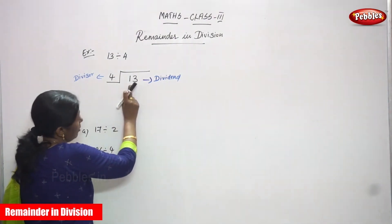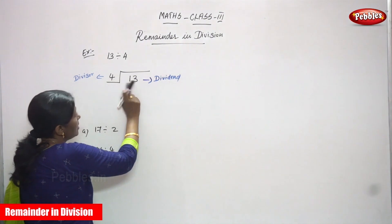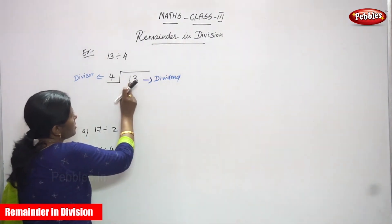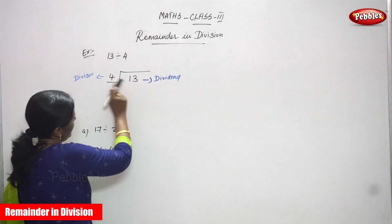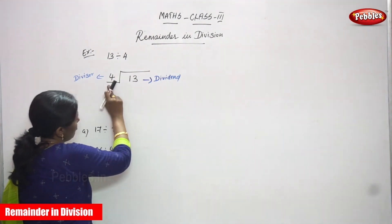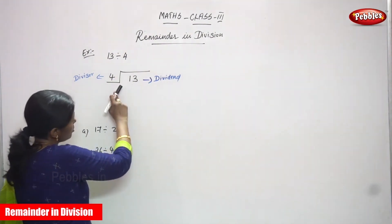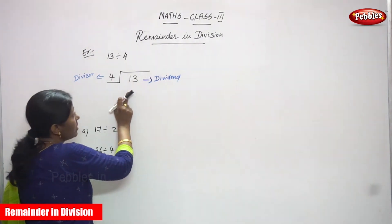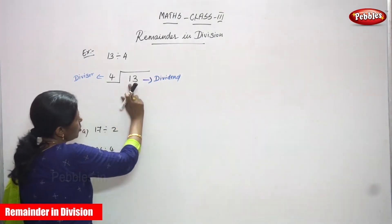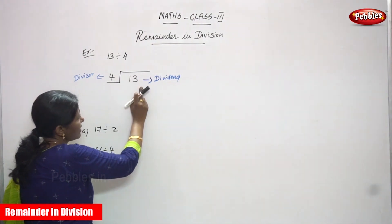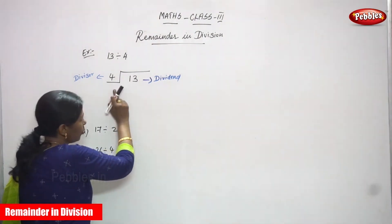First, you must see the first number. This is the 1's place and this is the 10's place. Compare with the 10's: 1 ten, going to be divided by 4. So 1 is less than 4, so it's not enough to divide. So you take the next digit, that is 3 ones. So 1 ten and 3 ones, you can get 13. So 13 is going to be divided by 4.